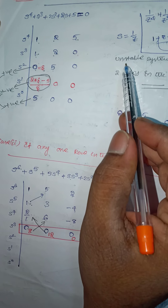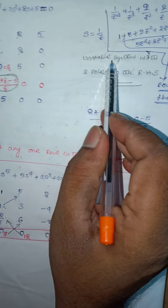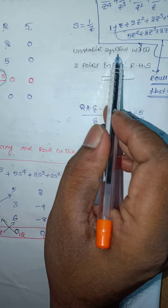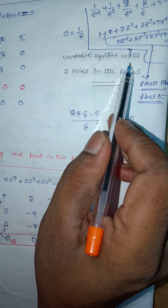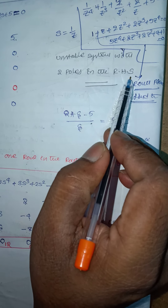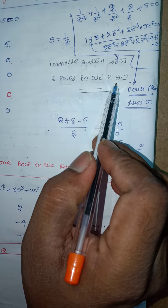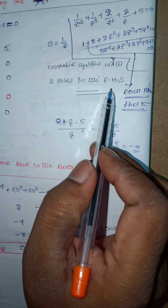From positive to negative is one sign change, and from negative to positive is another sign change — so 2 sign changes total. Therefore the system is an unstable system with 2 poles in the right half of the s-plane.